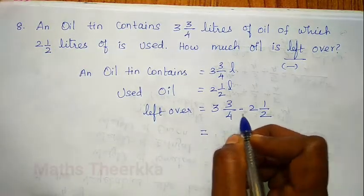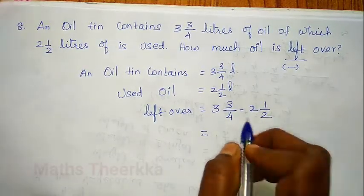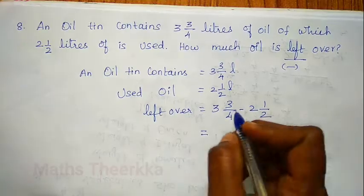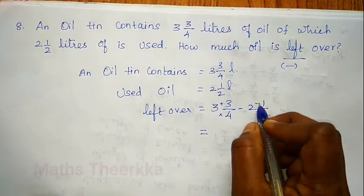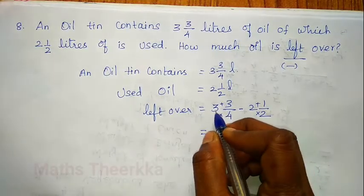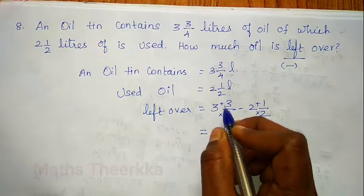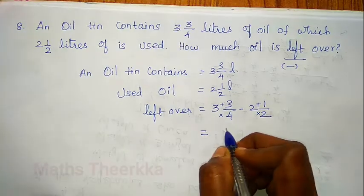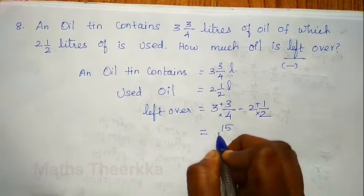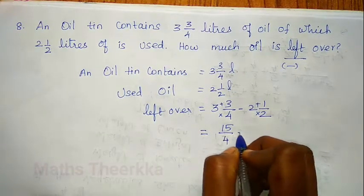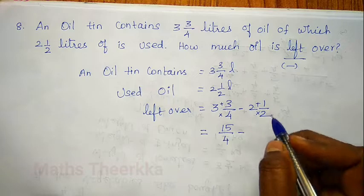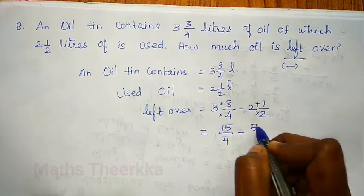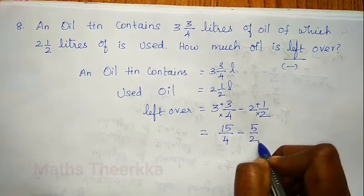We have mixed fractions, so we convert to improper fractions. Multiply plus: 4 × 3 = 12, 12 plus 3 = 15, so 15 by 4. Then 2 × 2 = 4, 4 plus 1 = 5, so 5 by 2.